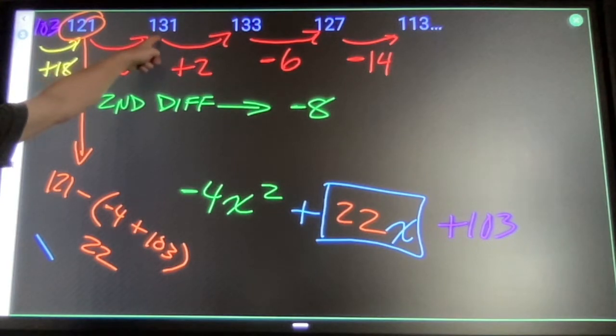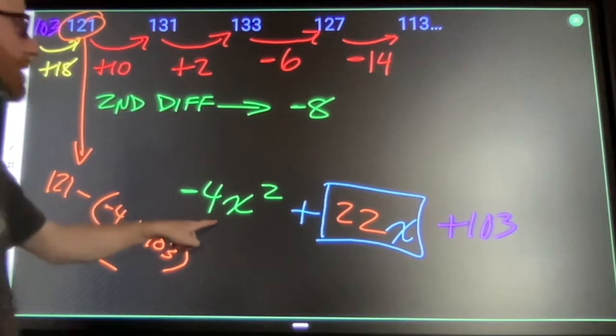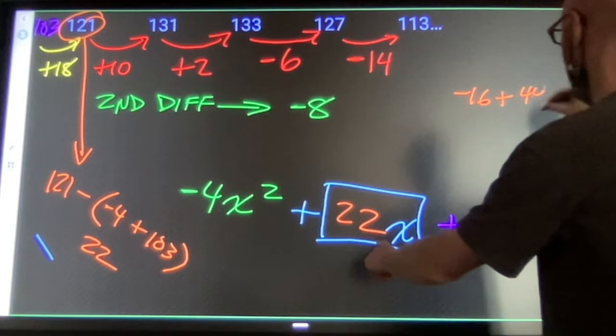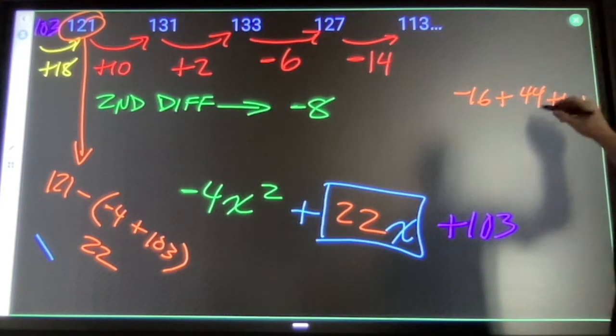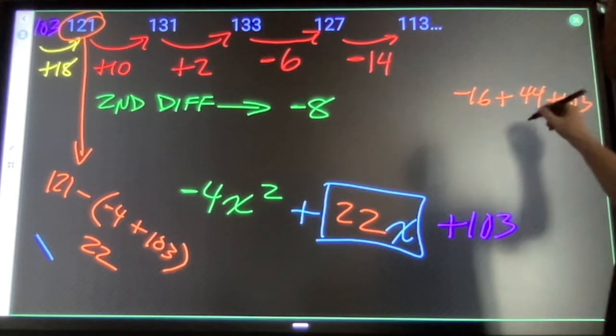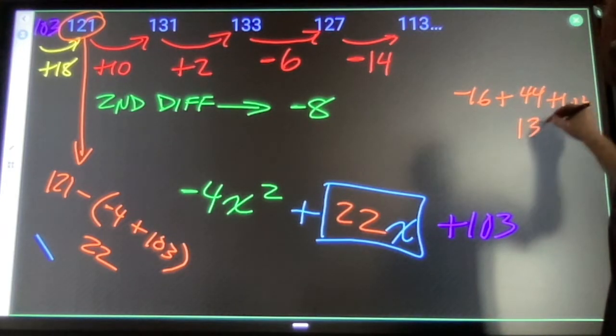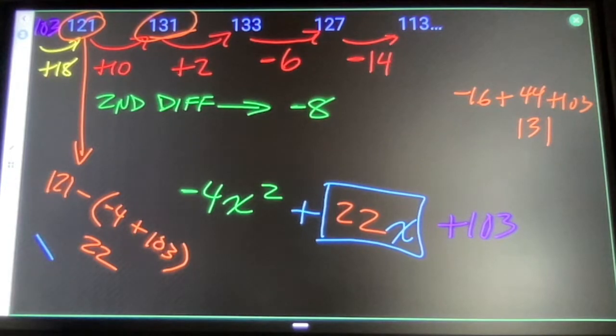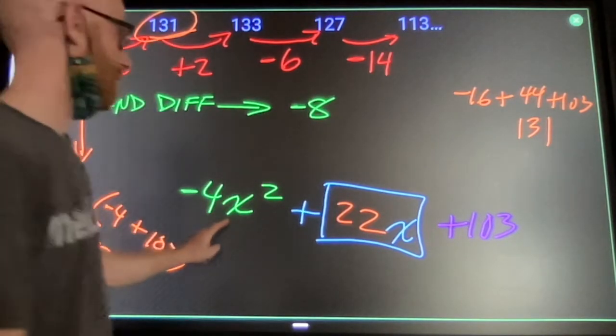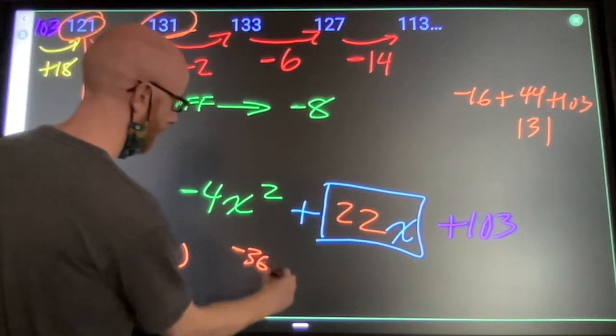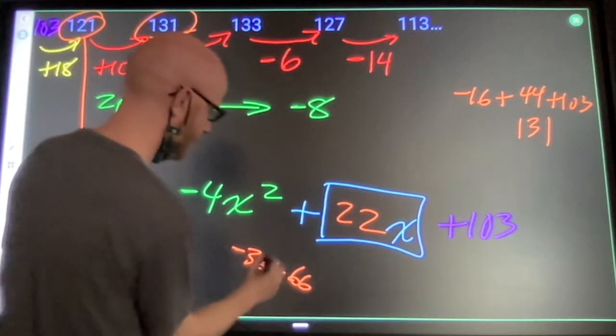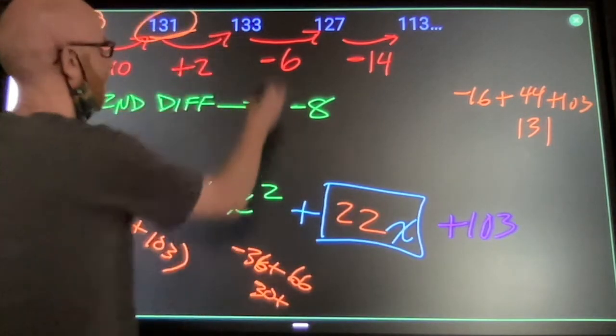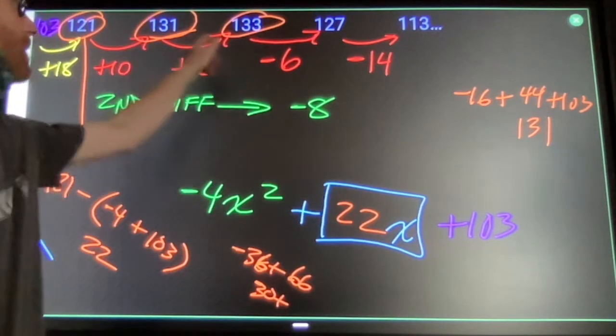Double check to make sure it works. Let me try with x is 2. That's negative 16 plus 44 plus 103. That's 147 minus 16 is 131. Works with my second term. Try it with my third term if I need to. That would be negative 36 plus 22 times 3 is 66. So we've got positive 30 plus 103. This equation builds that formula.